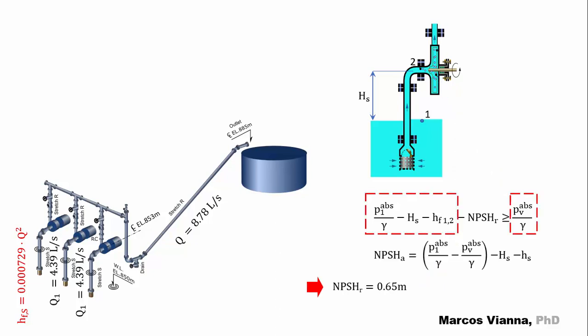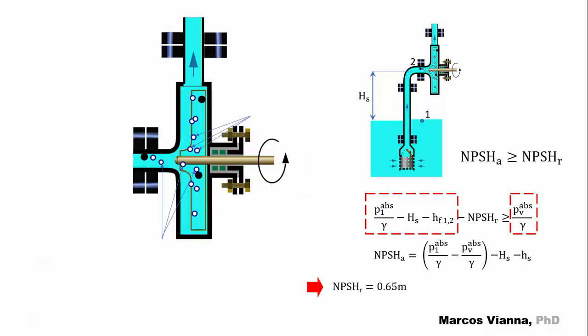This is what we call available NPSH. It's the absolute net head that we deliver to the pump. Of course, it must be greater than the required NPSH or vapor cavities will form inside the pump, bringing all the terrible consequences that we must avoid. There's a specific video in this channel about this topic. I'll leave its link in the description.